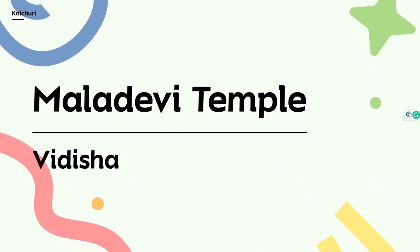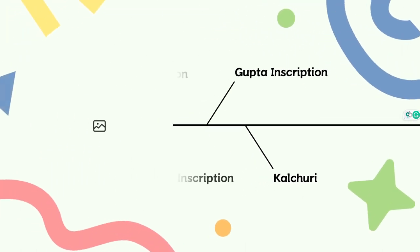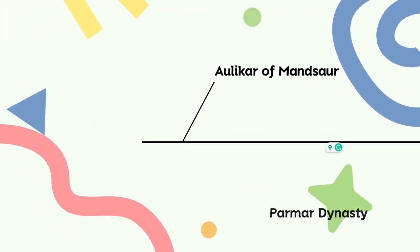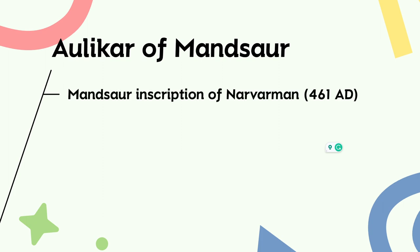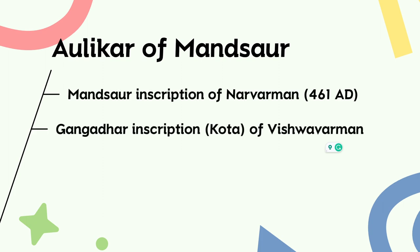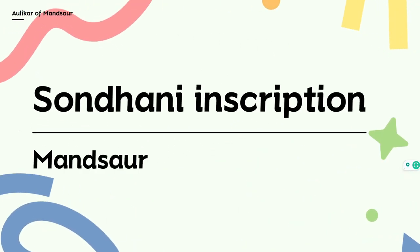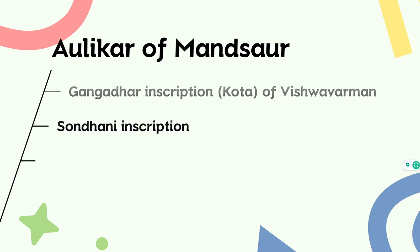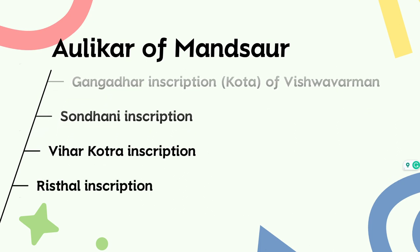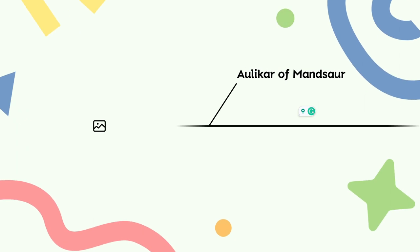The next most important inscription is the Alikar inscription of Mandsaur. The Aulikara dynasty is divided into two branches. The first is the Mandsaur inscription of Narvarman, 461 AD. Then you will find the Gangadhar inscription of Vishwabardhan. Then the Sunhani inscription, which is located in Mandsaur district. Then the Vihar Kota and Ristal inscriptions — Gangadhar Shilalek, Mandsaur Shilalek, Sunhani, Vihar Kota, and Ristal. Ristal is also located in Mandsaur.